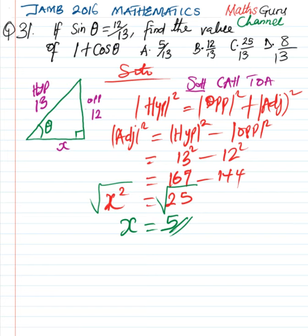Now, the question. We find the value of 1 plus cos theta. So, we have 1 plus cos theta, where cos theta is adjacent over hypotenuse. The adjacent is 5, so we have 5 over the hypotenuse, which is 13.